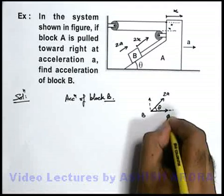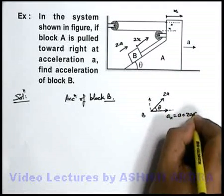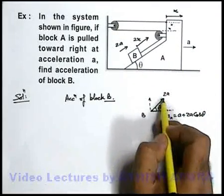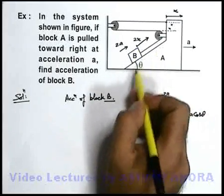So in x direction, the acceleration of block B can be written as a plus 2a cos theta. a is due to the acceleration of A, 2a cos theta will be due to the horizontal component of its acceleration on the surface of A.